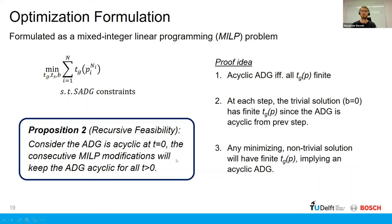And the proof of this is basically in the fact that initially, if the action dependency graph is acyclic, which can be guaranteed by a successful MAPF solution, at each step, if the trivial solution will result in an acyclic ADG and any solution which has got a smaller cost function than that trivial solution will necessarily also have an acyclic ADG. And therefore, we always have a feasible solution to that optimization problem.